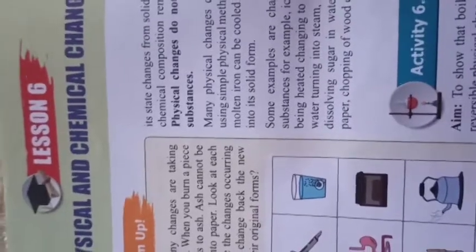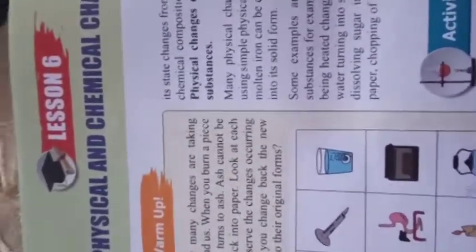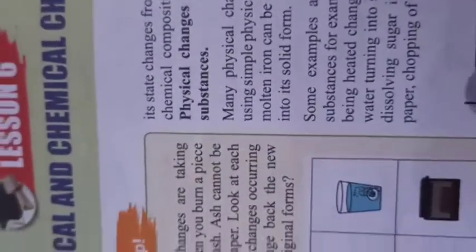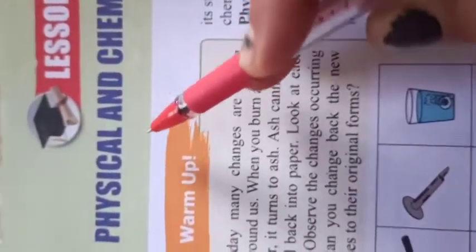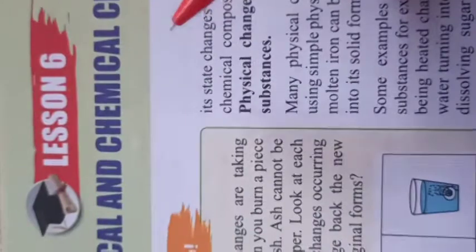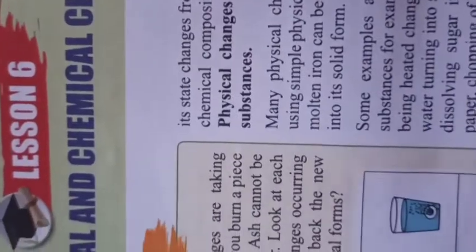Jai Gurudev students, welcome again in the science class. Children, we have already completed chapter number five, and today we will start lesson number six which is Physical and Chemical Changes. In class six also we studied about physical and chemical changes, but here in this chapter we will study only about physical and chemical changes in more detail.